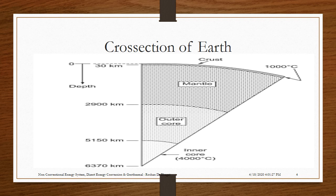The image shows the cross-section of Earth. The layers are the mantle, outer core, and inner core. As we move towards the center of the Earth, the temperature starts rising, reaching more than 4000 degrees Celsius at the center.